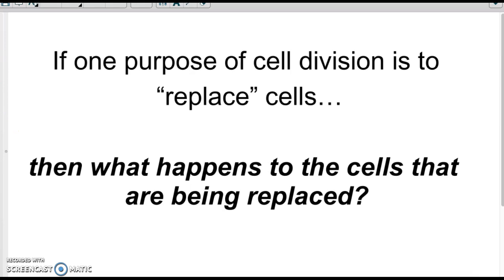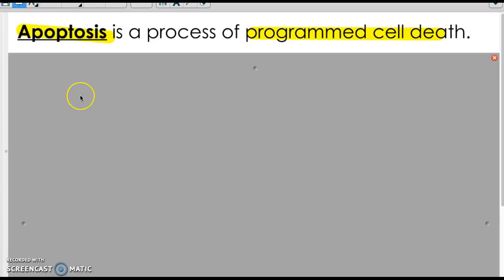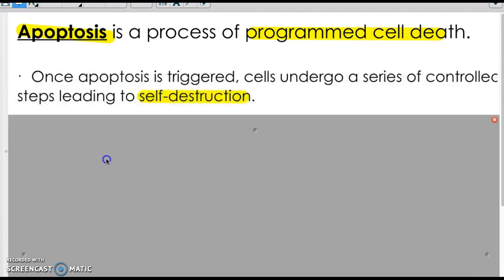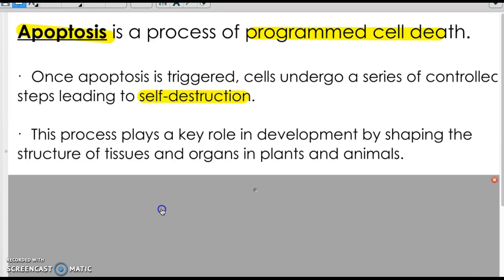And so if one purpose of cell division is to replace cells, then what's happening to the other cells that are being replaced? Where do they go? What happens to them? Well, it's a process called apoptosis. And apoptosis is essentially the process of programmed cell death. So once cells are triggered to undergo apoptosis, it's basically a controlled process leading to self-destruction.